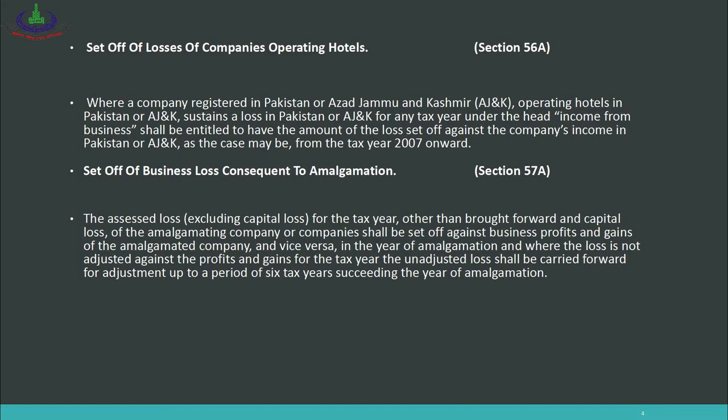When an amalgamation occurs — that is, when two companies A and B merge to create a new company — if one of those companies had a loss, that loss can be adjusted against the profits of the other company in the year of amalgamation. Where the loss is not fully adjusted against the profits and gains for the tax year, the unadjusted loss shall be carried forward for adjustment up to a period of six tax years succeeding the year of amalgamation.